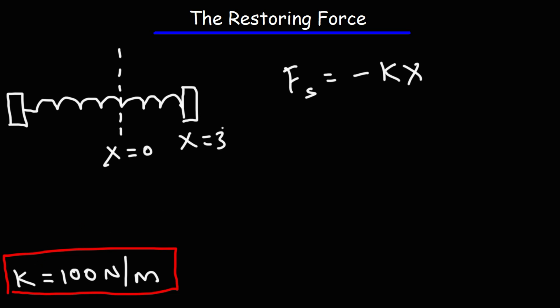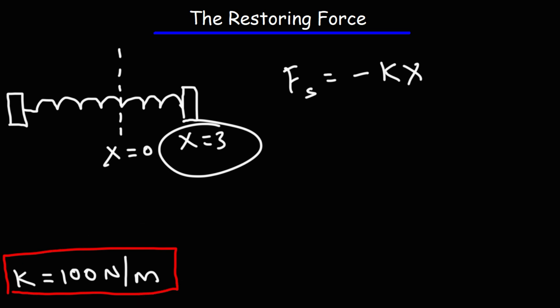So given these values — we have the value of x and we have k — let's calculate the restoring force. The restoring force is a function of position. As you can see, this restoring force depends on the value of x, so it's a function of x, or a function of position. As the position changes, the magnitude of the restoring force will change, as well as its direction.